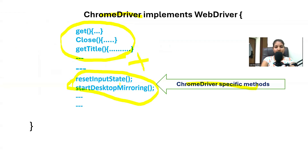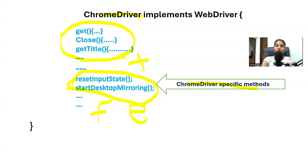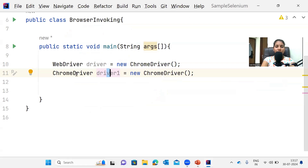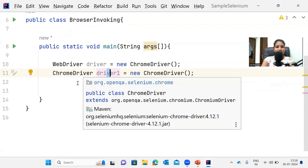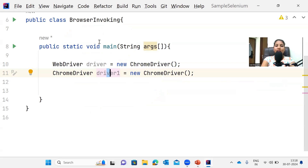If you accidentally use a Chrome-specific method in your Selenium script, that script will not work in any other browser like Firefox or Microsoft Edge. If you invoke that script in another browser, it will fail. That's why we cannot use Chrome driver-specific methods inside a Selenium script, and that's why this approach is not recommended.